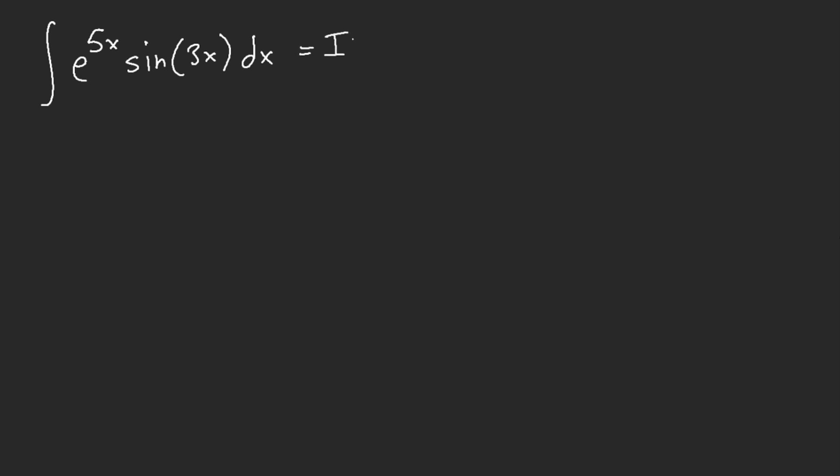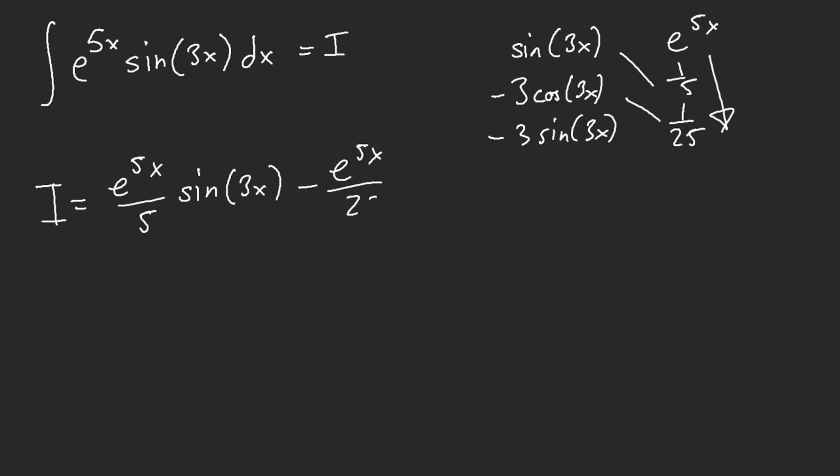To speed integrate this, I let this equal to I. So this is sine 3x and this is e to the 5x. Now I got negative 3 cosine of 3x and negative 3 sine of 3x here. Then this is the same thing but with 1/5th and 1/25th. My I equals e to the 5x times 1/5th of sine 3x. I got e to the 5x times 3/25ths cosine 3x, and then minus 3/25 I.